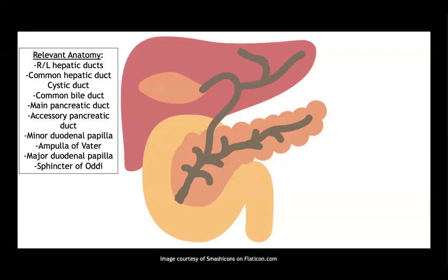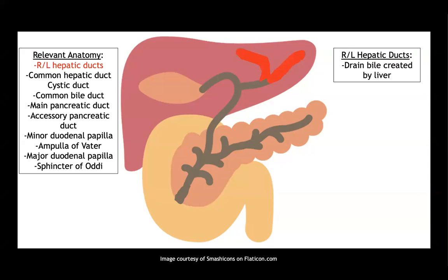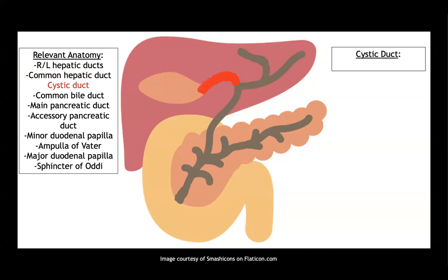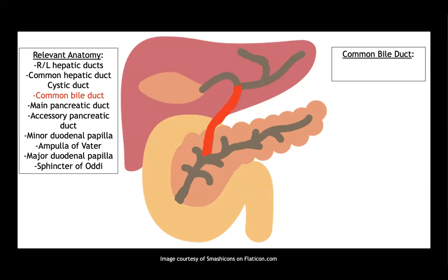Moving on to how the pancreas connects to the gallbladder and liver by way of bile ducts. At the top you have your right and left hepatic ducts, which drain bile created by the liver. Those drain into the common hepatic duct — a confluence of both ducts. You have the cystic duct connecting the gallbladder to the common bile duct, which is a formation of the cystic duct and the common hepatic duct.